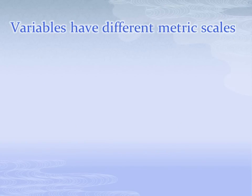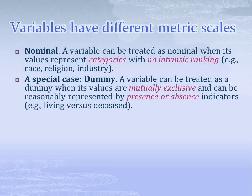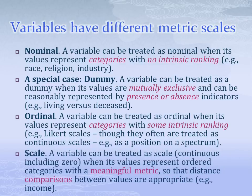There are three main types of variables, each of which we'll discuss in more detail in subsequent slides. The first type is called nominal — nominal variables are categorical and have no intrinsic ranking. There are also special kinds of nominal variables called dummy variables. The second type is called ordinal, and the third type is called scale. Scale variables include continuous values that can be meaningfully compared, for example income.